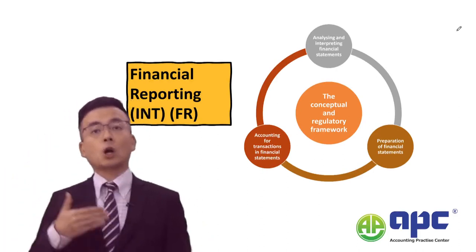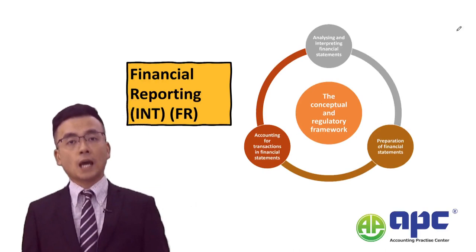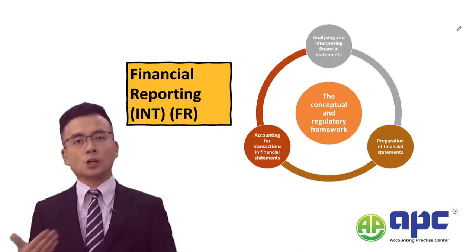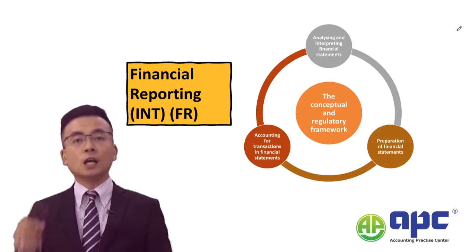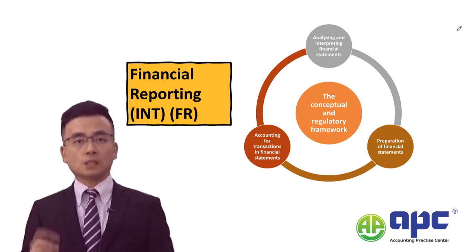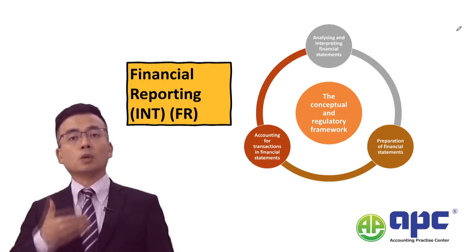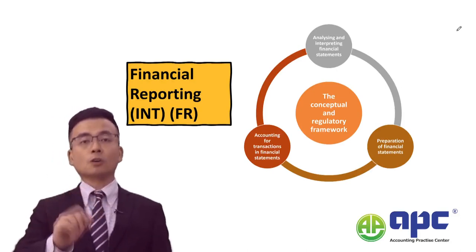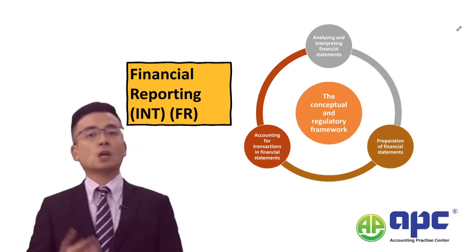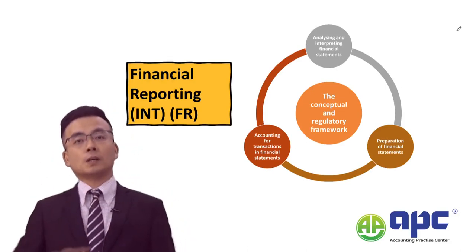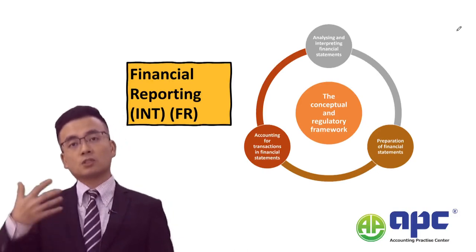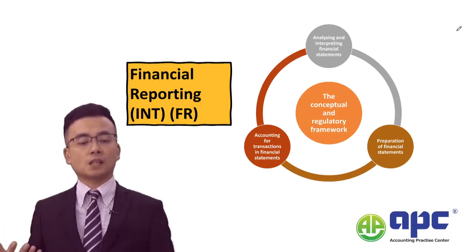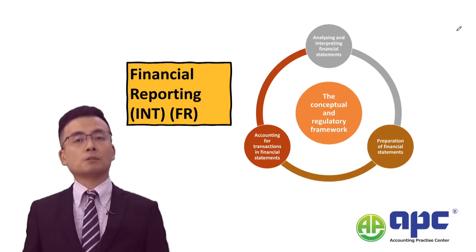For example, according to IAS 33, the International Accounting Standards No. 33 on earnings per share, certain areas would not be tested — for example, related to share options. The diluted EPS will be tested, but the timing to grant share options to directors will not be tested under IAS 33.